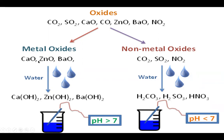When metallic oxides react with water (H₂O), they form bases. Calcium oxide reacts with water and forms calcium hydroxide. Zinc oxide reacts with water and forms zinc hydroxide. Barium oxide reacts with water and forms barium hydroxide. This means metal oxides, whenever they react with water, form bases.